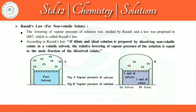Raoult's law has three categories: first is solid solute plus liquid solvent, which means non-volatile solute in volatile solvent; second is liquid solute and liquid solvent, meaning volatile solute and volatile solvent; and third is gaseous solute and liquid solvent, which is a special case of Henry's law. In this video we will cover the first category — non-volatile solute in a volatile solvent.